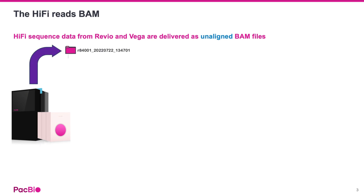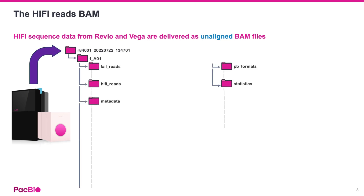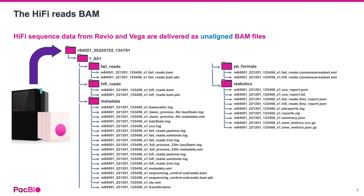Our Revio and Vega instruments deliver data in a conserved directory structure labeled by run identification number and sample well. Each sample well directory contains five subdirectories for fail reads, HiFi reads, metadata, PacBio dataset format files, and statistics.